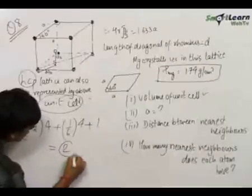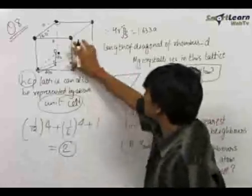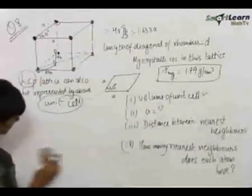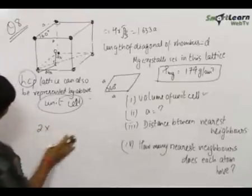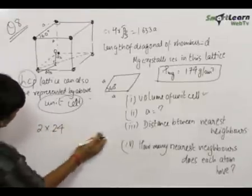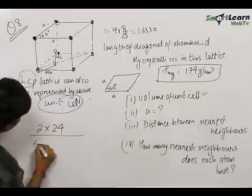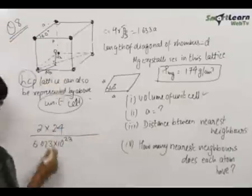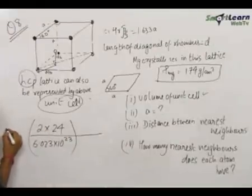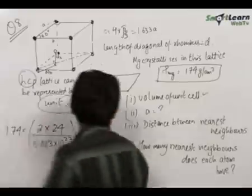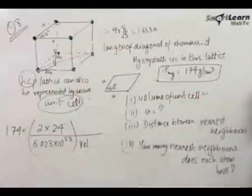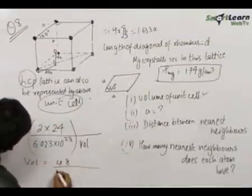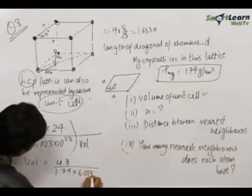The total contribution comes out to be: 4 × (1/12) + 4 × (1/6) + 1 = 2. So the total number of atoms in this unit cell is 2. Therefore, the total mass in this unit cell is 2 × 24 / (6.023 × 10²³) grams. Dividing by density 1.74 gives us the volume: V = 48 / (1.74 × 6.023 × 10²³) cm³.